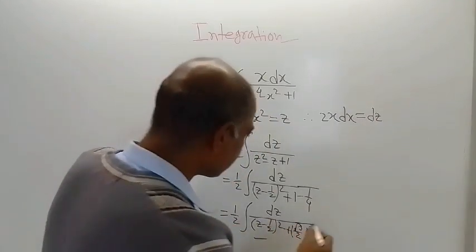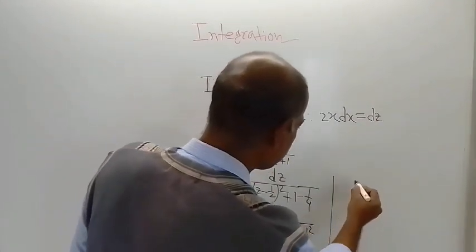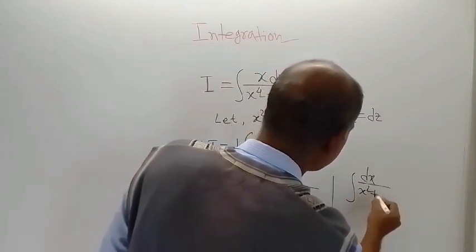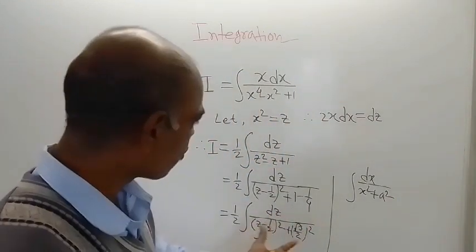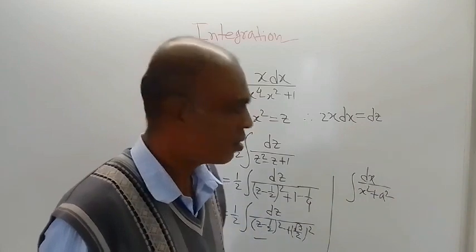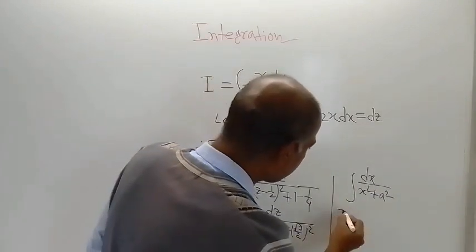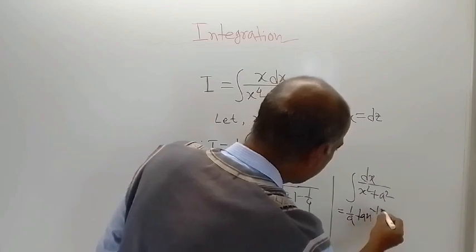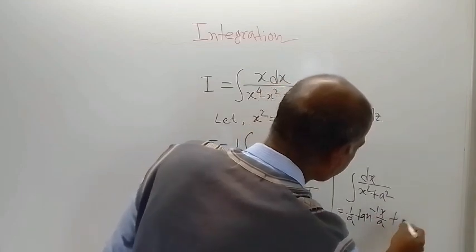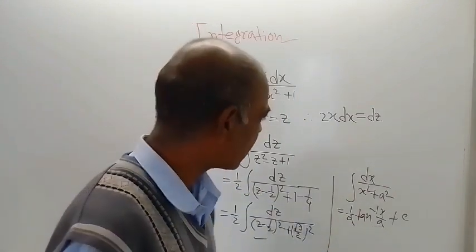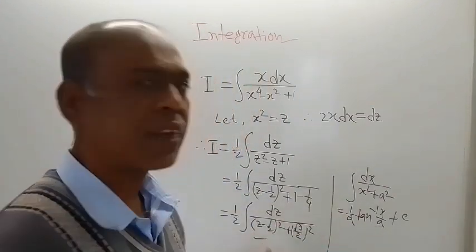So what is the form of this? The form is integration of dx divided by x square plus a square. And what is the result? The result is known: 1 by a tan inverse x by a plus a constant of integration c.